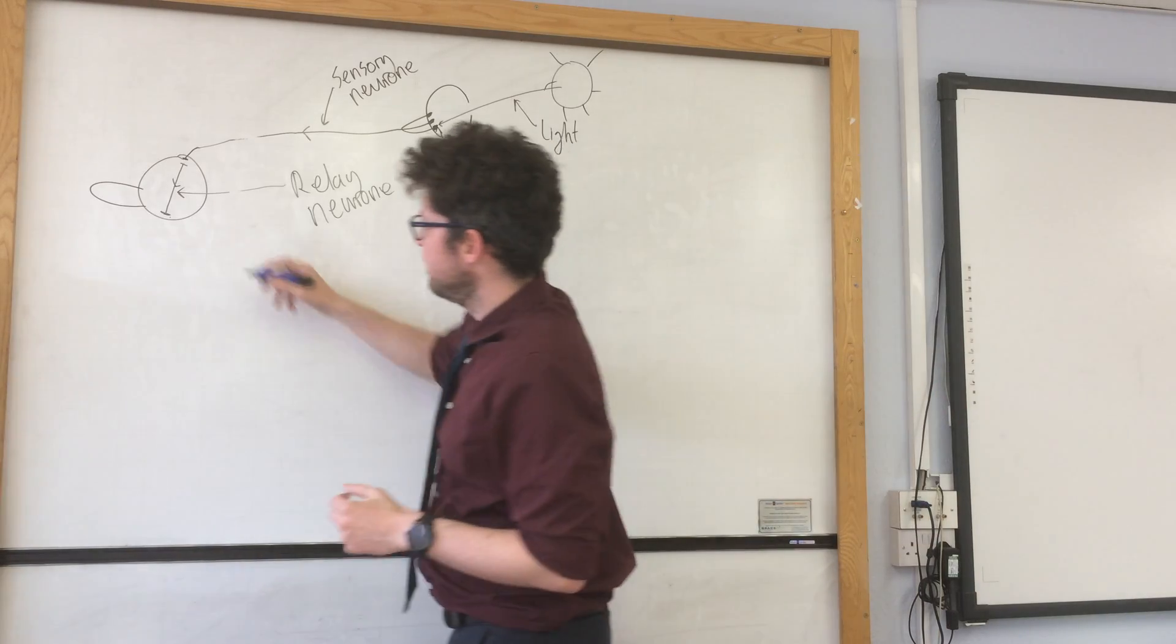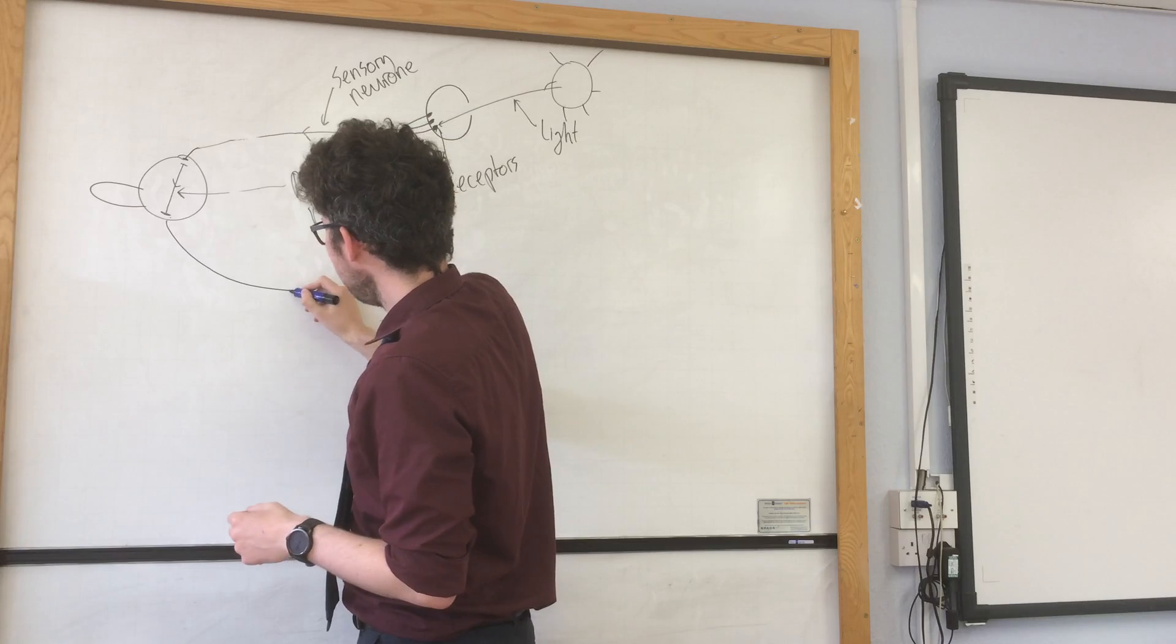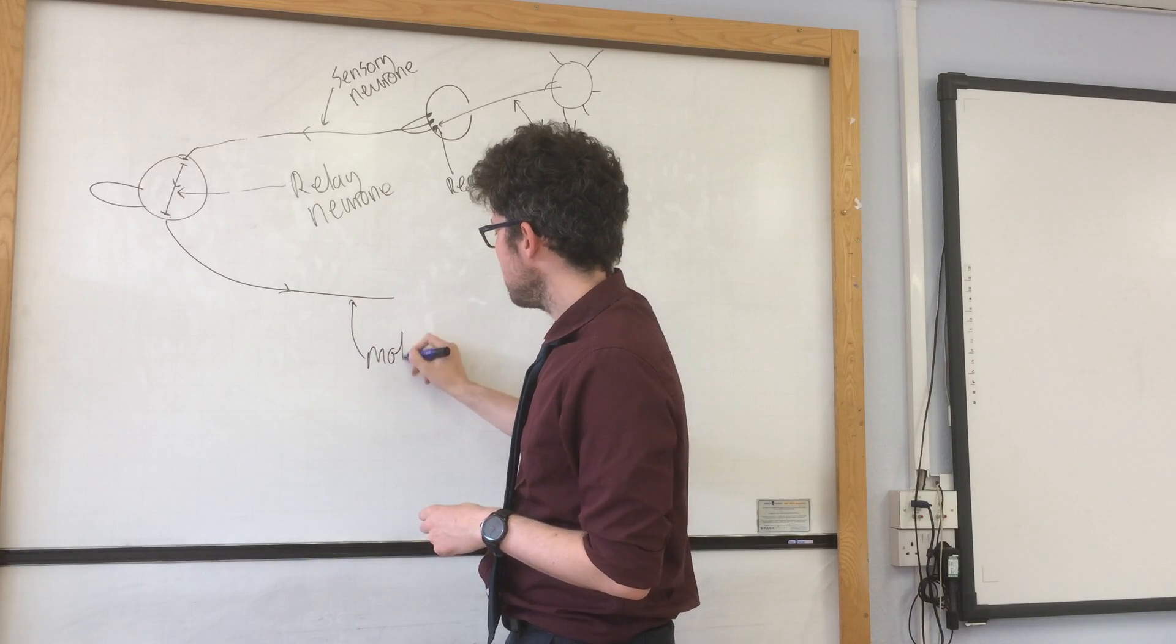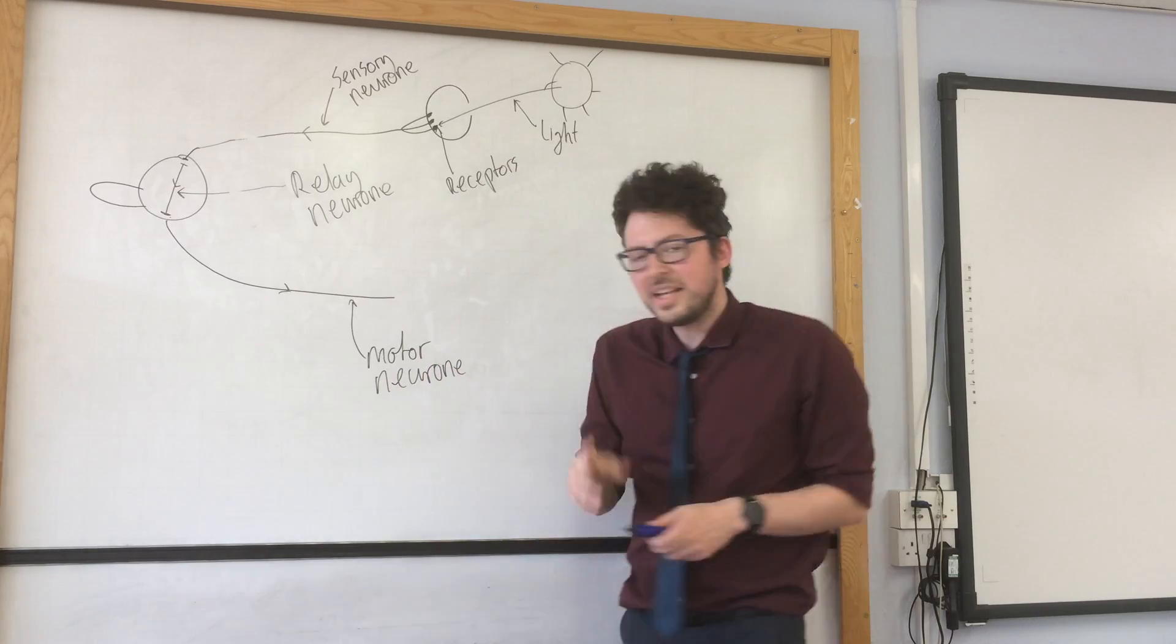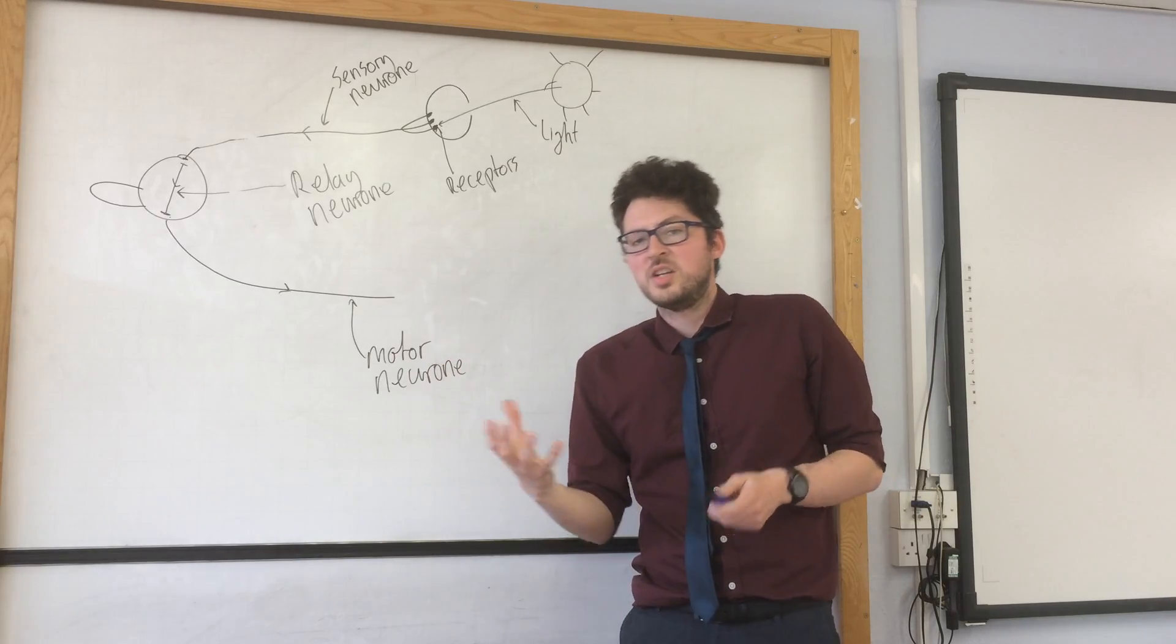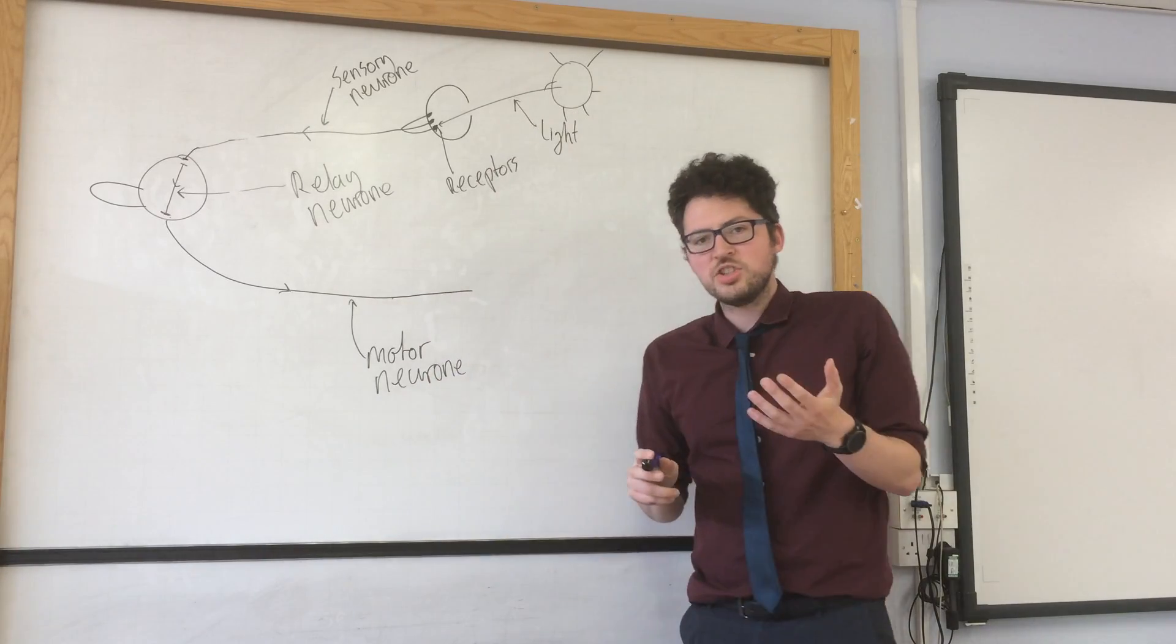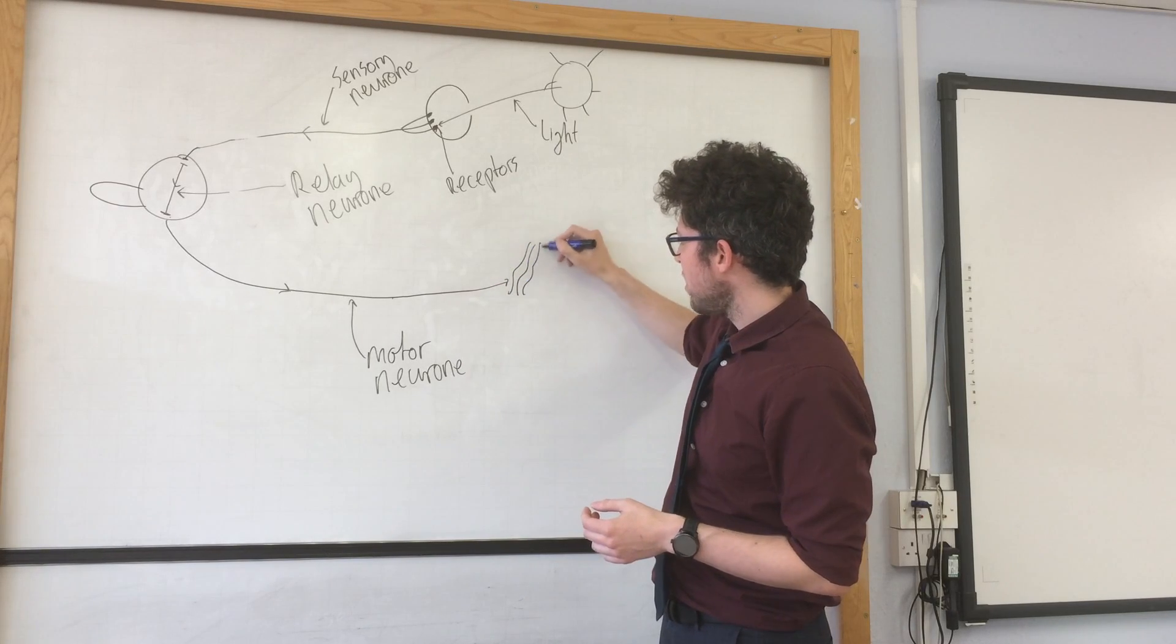Now this is called the motor neuron. So here again, this is another electrical impulse. And this is called the motor neuron. Now an easy way to remember that is that motor actually means movement. So motor movement allows us to bring about a movement. And this electrical impulse will then reach a muscle.